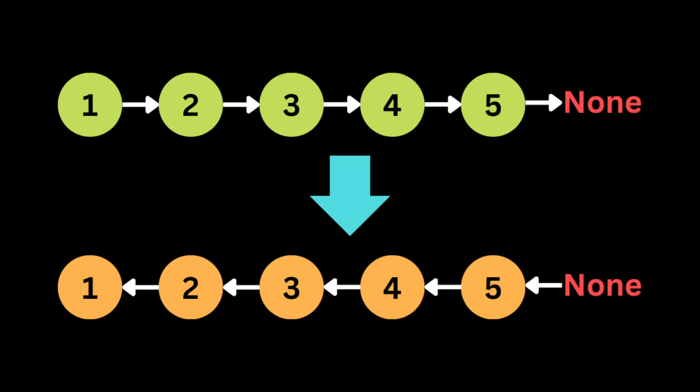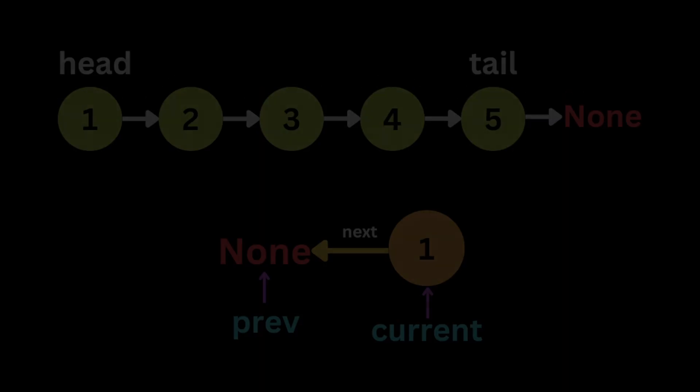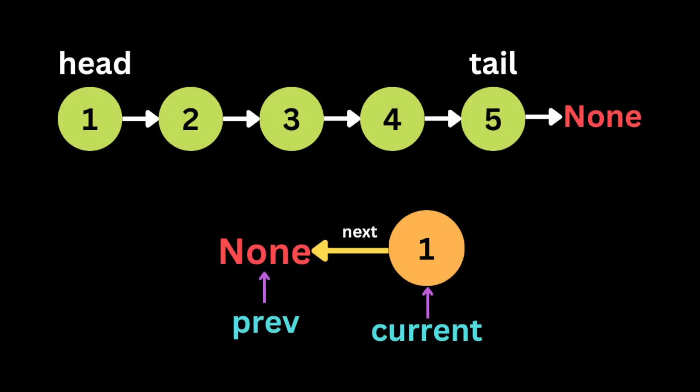Let's say we have this input linked list. The head in this linked list is the one node. When we reverse it, we will get something like that — the head will be five and one will be the tail. To solve this problem, we're going to initialize two variables that will help us reverse this linked list.